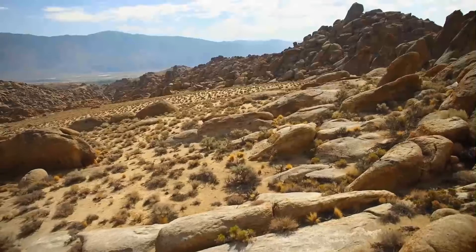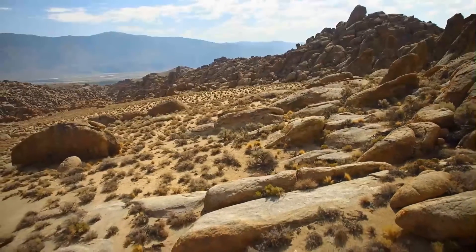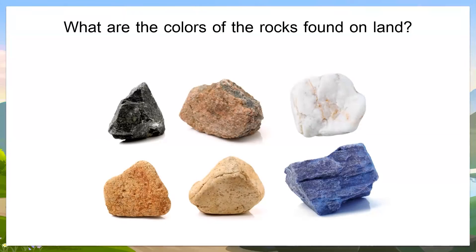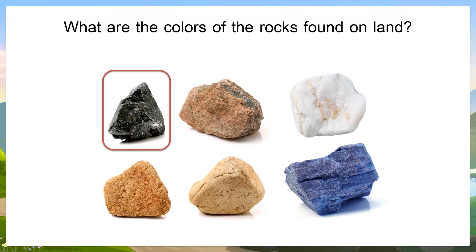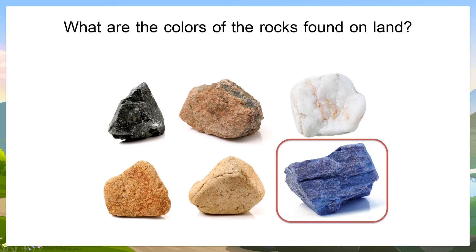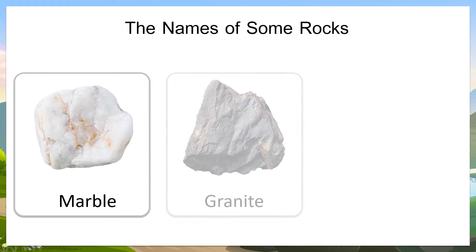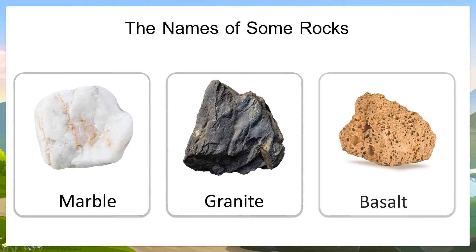Rocks are one of the most important components of land. What are the colors of the rocks found on land? Rocks come in light and dark colors, such as brown, black, white, and blue. Rocks have many names. Some of them are marble, granite, and basalt.